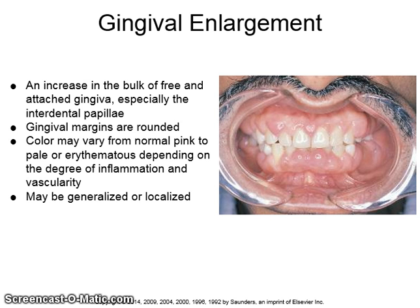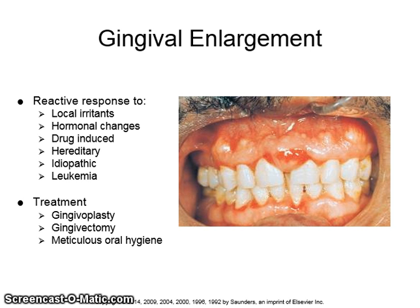Gingival enlargement is an increase in the bulk of free and attached gingiva, especially the interdental papillae. Gingival margins are rounded, and the color may vary from normal pink to pale or erythematous, depending on the degree of inflammation and vascularity. It may be generalized or localized. Causes include reactive response to local irritants, hormonal changes, drug-induced, hereditary, idiopathic, or leukemia. Treatments include gingivoplasty, gingivectomy, and meticulous oral hygiene.